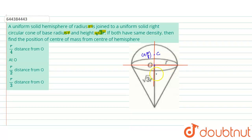Similarly, the center of mass for the cone will be in the negative direction at a height h/4 from the origin. The coordinate is (0, −h/4), negative because it is below the origin. Here h is simply √3r, so c2 is at −√3r/4.